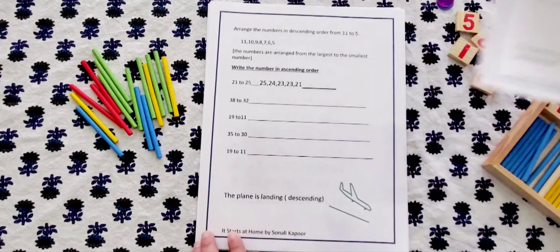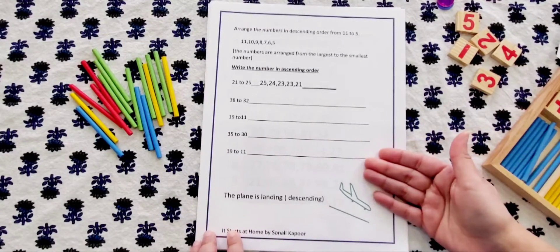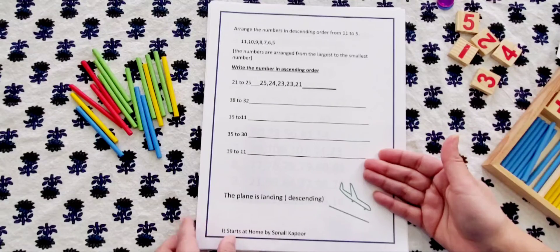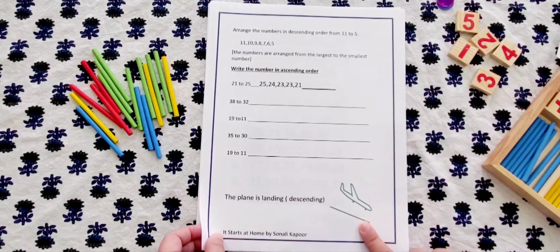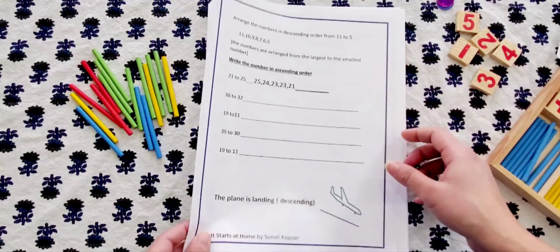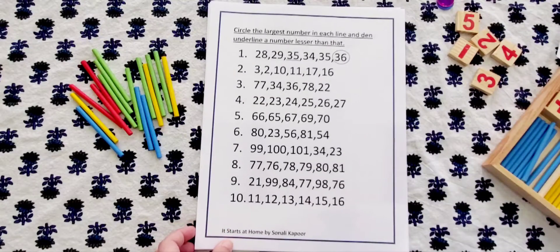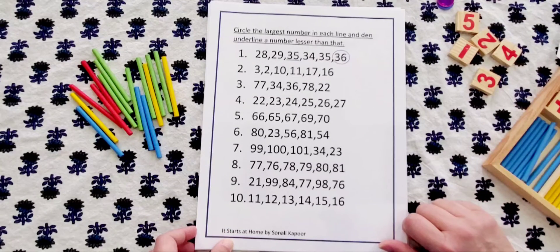The next one is this one needs to be done in descending order and the plane is descending down, so again the same numbers but for descending.